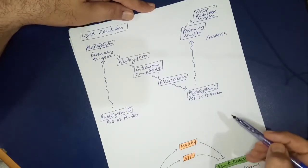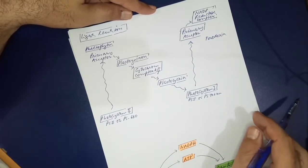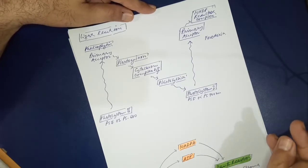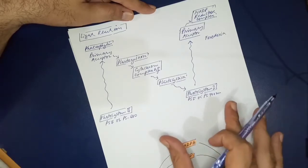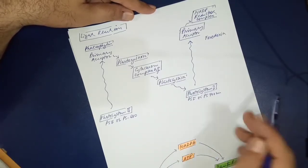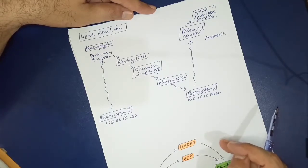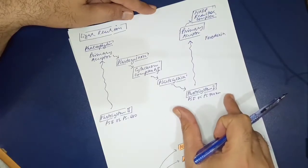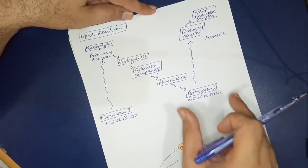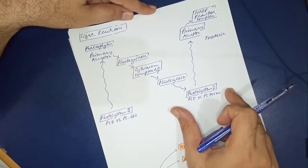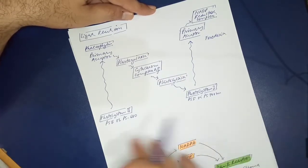Photosynthesis was originally discovered in bacteria. A scientist — you may have heard of van Niel — studied the photosystem in bacteria. The first pigment system discovered was Photosystem 1 in bacteria, which is involved in cyclic photophosphorylation. Because it was discovered first, it was named Photosystem 1. The one discovered later was named Photosystem 2.